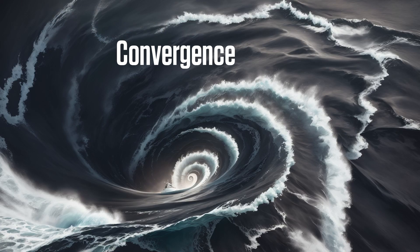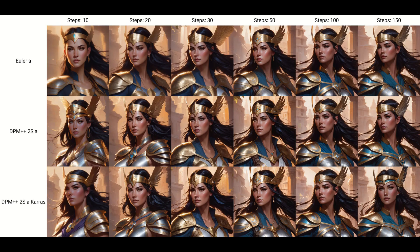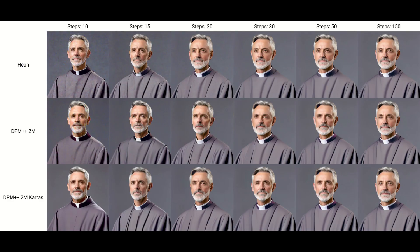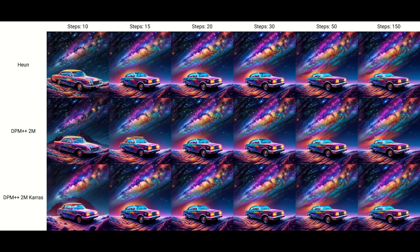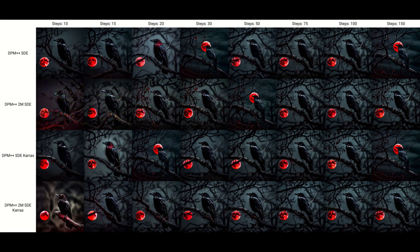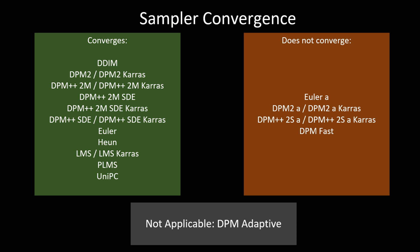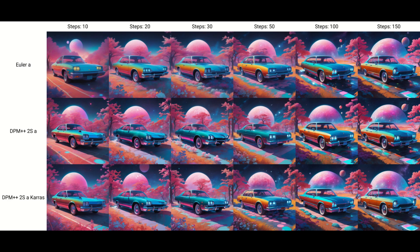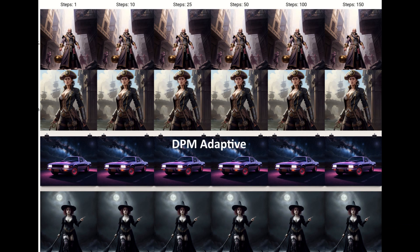Next, let's talk about convergence — whether or not the output image changes substantially if you add more steps. For converging samplers, the image does not change much once it reaches a particular output; little details can change, but the overall image is pretty set. This is because most of these samplers do not add noise back into the latent image during generation. For non-converging samplers, the image will continually change as more steps are used. These samplers have a lowercase 'a' in their name, which stands for ancestral, meaning they add noise back in during image generation. Since DPM Adaptive does not use steps, convergence is not applicable to it.